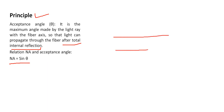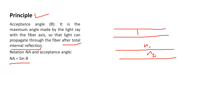For example, this is the core of the fiber having refractive index N1, and this is the cladding having refractive index N2. This is the outside medium, which acts as the rarer medium, while the core is the denser medium. This is the fiber axis.